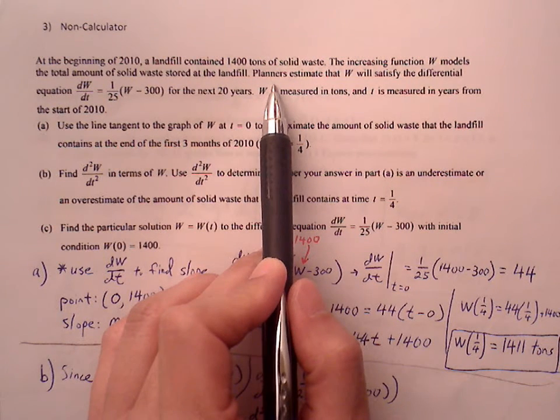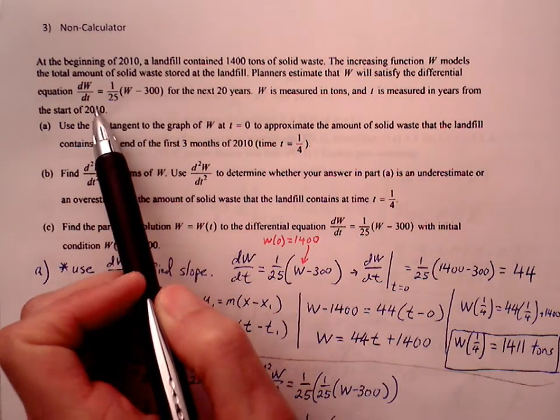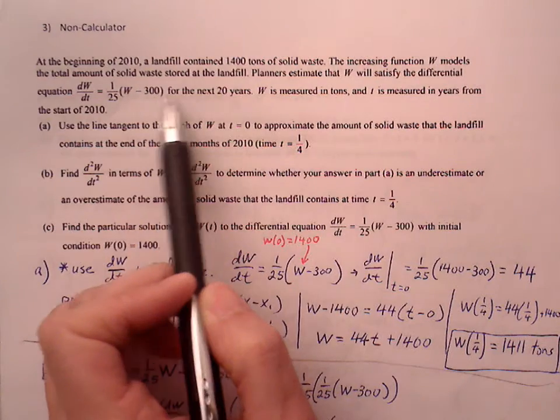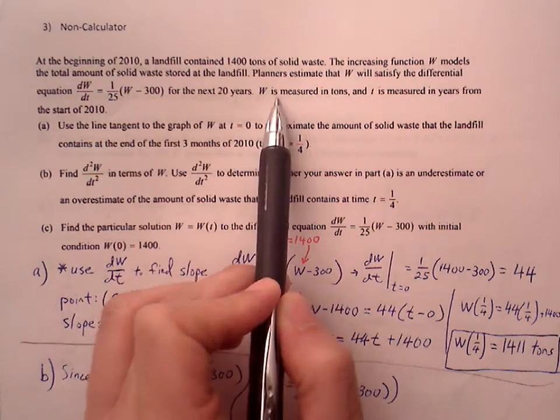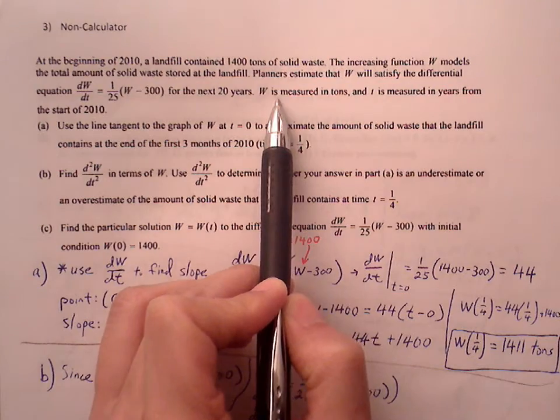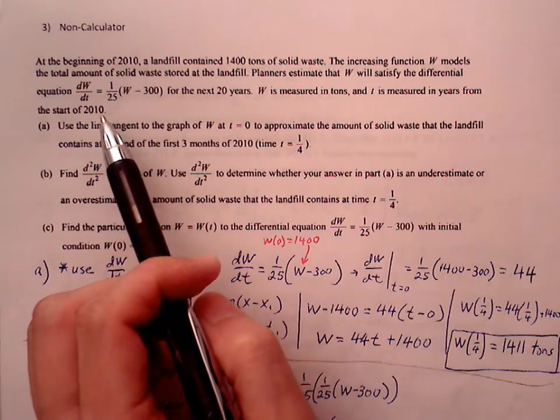Planners estimate that this function W will satisfy the differential equation dW/dt equals 1/25(W - 300) for the next 20 years. The function W is measured in tons and t is measured in years starting from 2010.